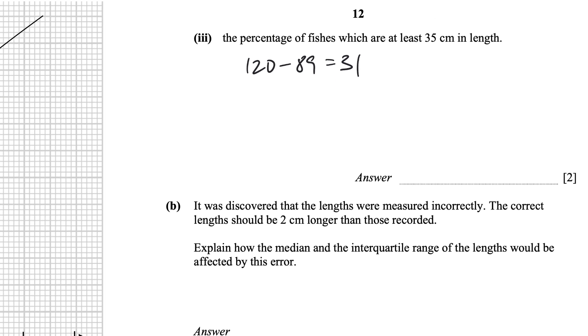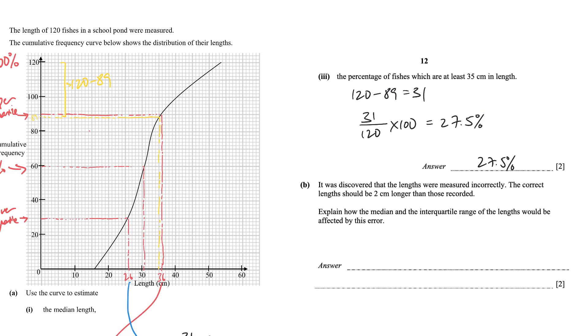And the percentage of fishes that are at least 35 cm in length is basically this number. And to find a percentage of it, you divide it by the total number of fishes, and you multiply by 100, you get 27.5%.